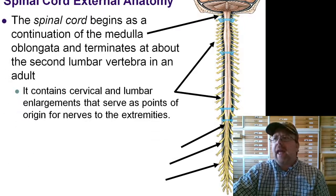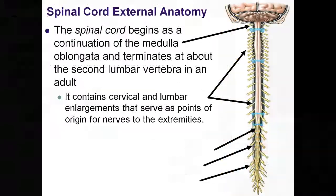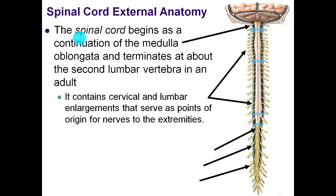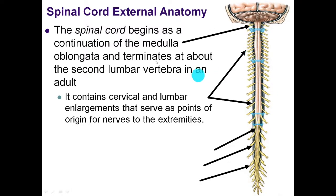Let's look a little bit at the spinal cord anatomy. The spinal cord begins as a continuation of our medulla oblongata — it's really just the same thing. The brain is going to have the spinal cord exit out of that brain stem. Then it terminates at the second lumbar vertebrae. It has 31 branches, and it also has cervical and lumbar enlargements.